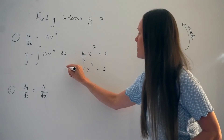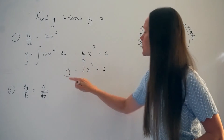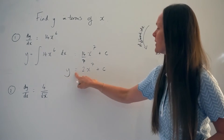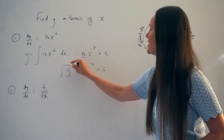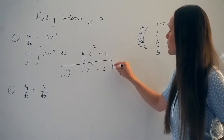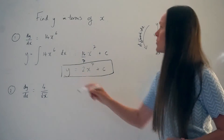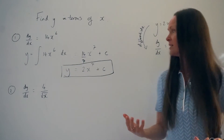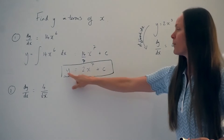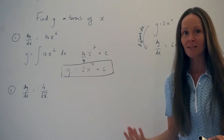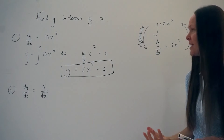And then the last step is to simplify. So 14 divided by 7 is 2, so the answer is 2x to the power of 7 plus c. Remember, this is an equation — y equals this. So when it says find y in terms of x, you're finding an equation where y is the subject.